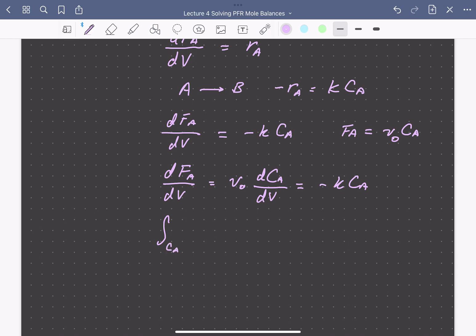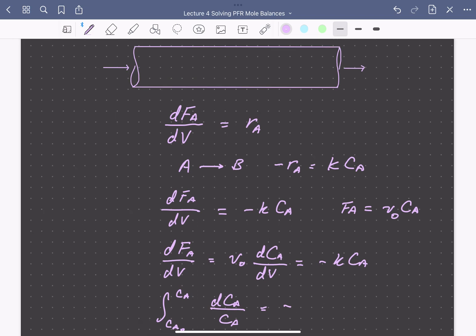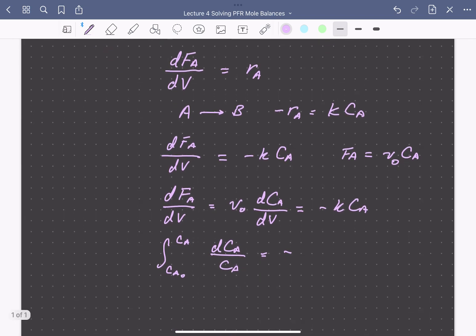We're going to integrate our left-hand side from CA0 to CA, dCA over CA. On our right-hand side we have just some constants we can pull out of the integral: the reaction rate constant k divided by the inlet volumetric flow rate, times the integral of dV from zero to V.